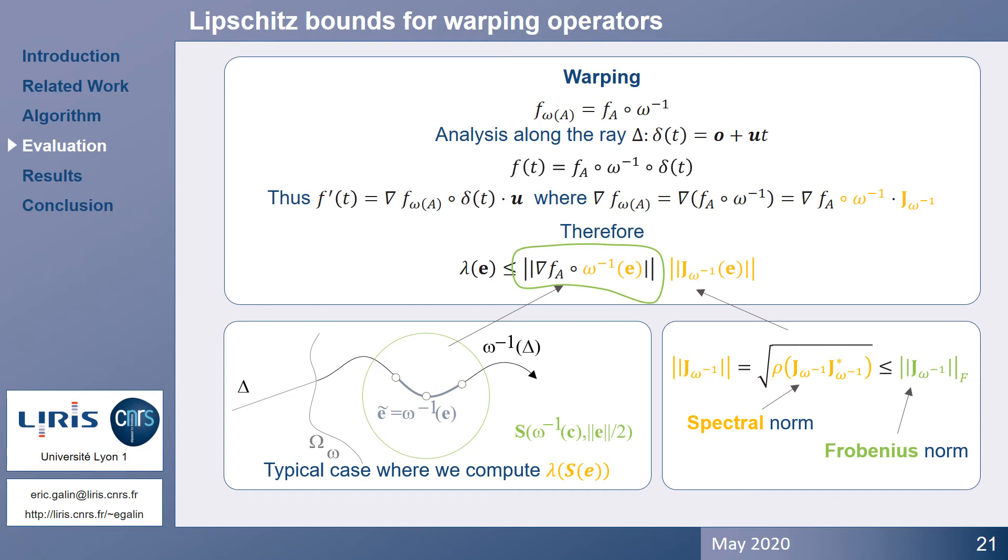Otherwise, we can resort to computing the Frobenius norm, which is simpler to evaluate.